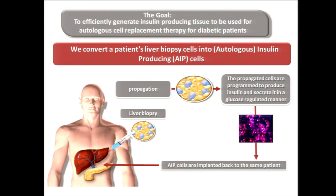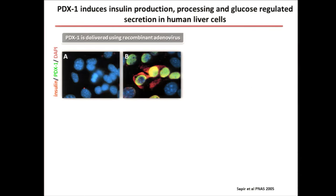To see whether it can work in humans, we made a collaboration with a liver transplant center, received over 70 human liver specimens, and analyzed whether a diabetic patient himself could be the donor of his own therapeutic tissue — meaning the diabetic patient would donate a liver biopsy, which could be propagated, transdifferentiated, and then implanted back into the same patient instead of pancreatic islets from cadaveric donors.